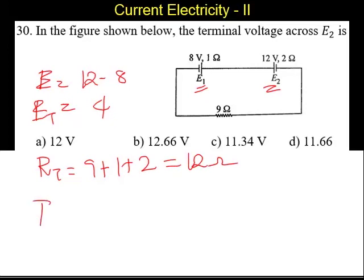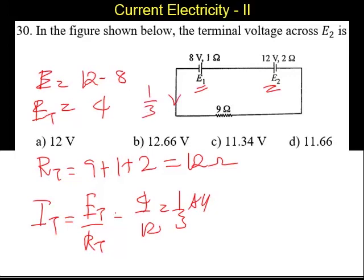The total current through the network is equal to total EMF by total resistance, which is 4 by 12. It is 1 by 3 ampere. Current through this network is 1 by 3 ampere.